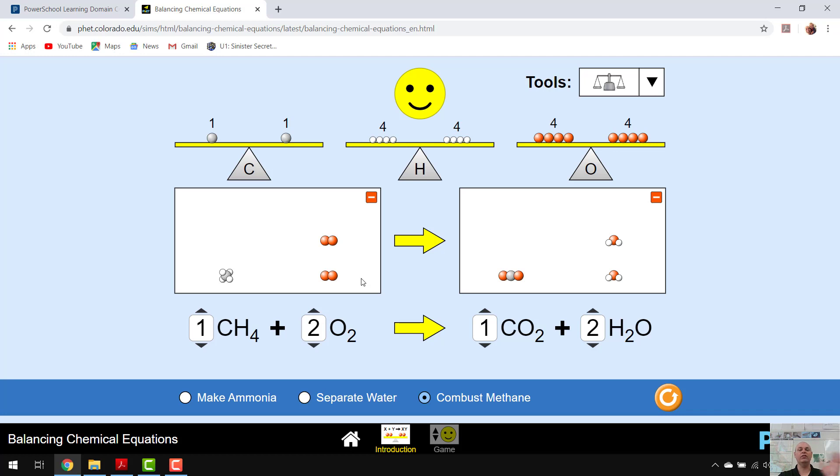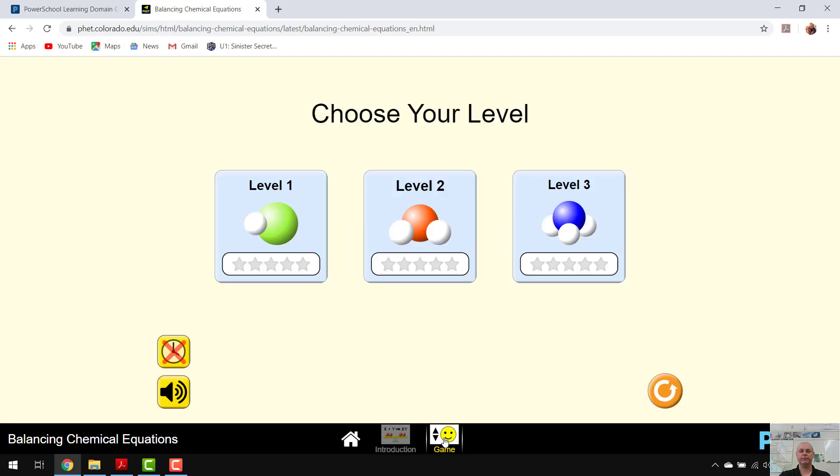Run through each one. Once you've done that and you're comfortable with doing that for those three examples, make ammonia, water, and combust methane, then I want you to go down to the bottom and go to the game right here. You're going to do each level of the game, and I need you to get a score of five or higher. And then you're going to print that score for each level.